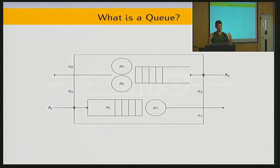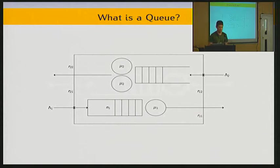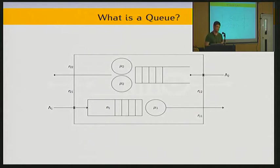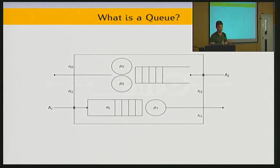So we've got a Python package called Ciw — C-I-W — which is Welsh for a queue. We've got this Python package where we can easily define our parameters and then simulate the queue, rather than coding up a simulation ourselves. I'm going to show you an example of how we'd simulate a network like this.